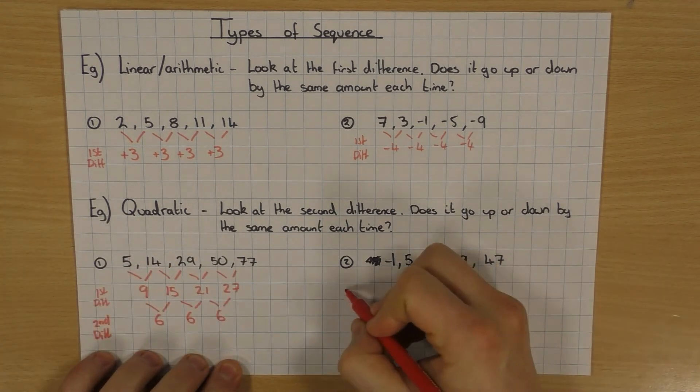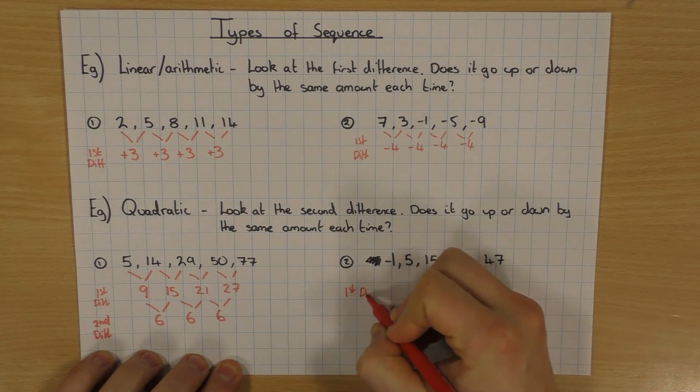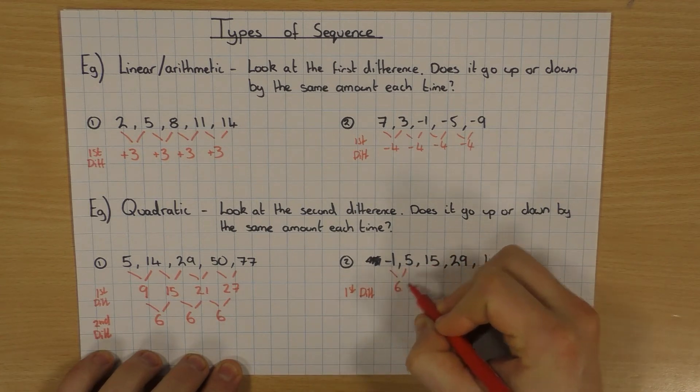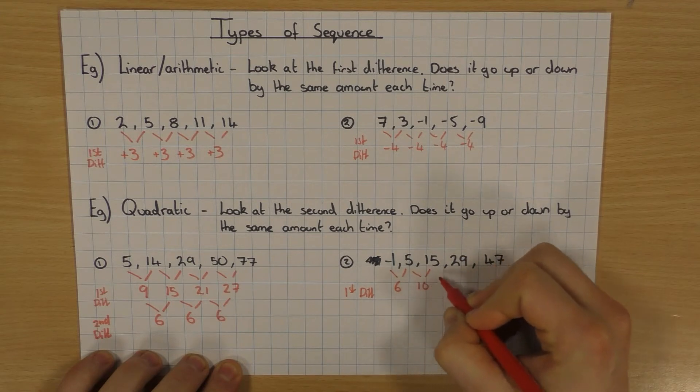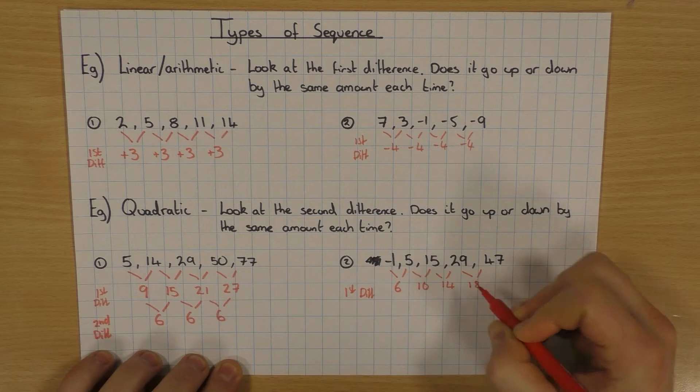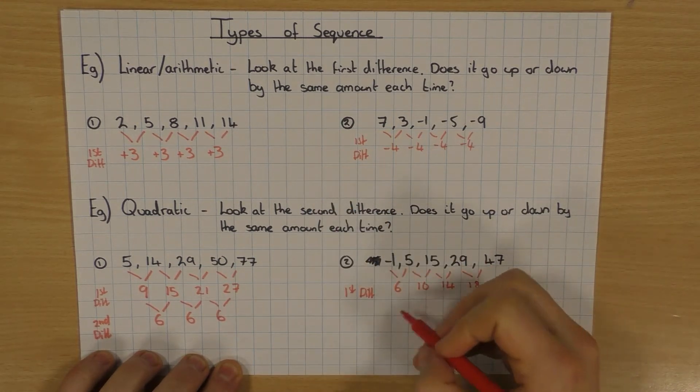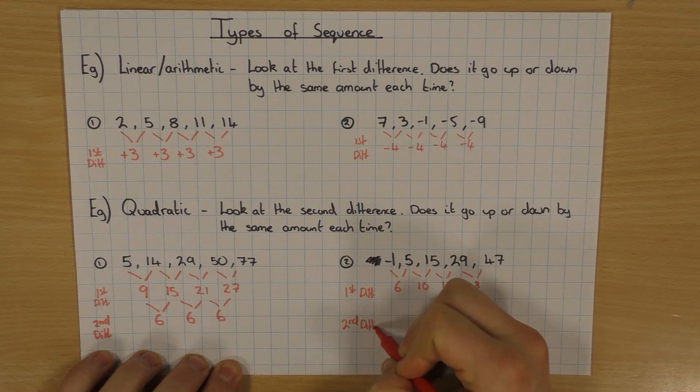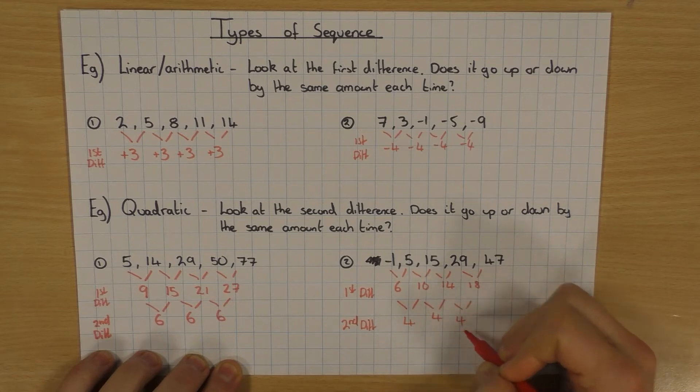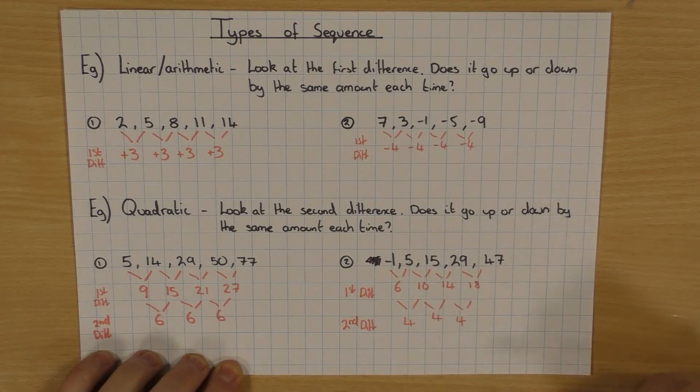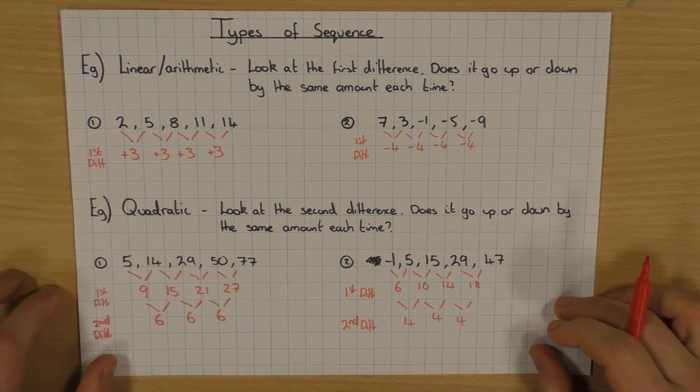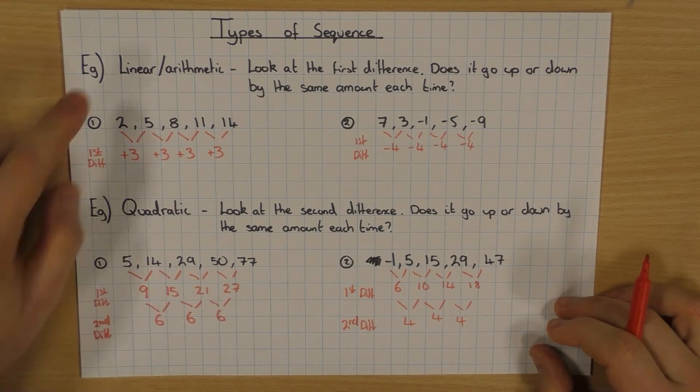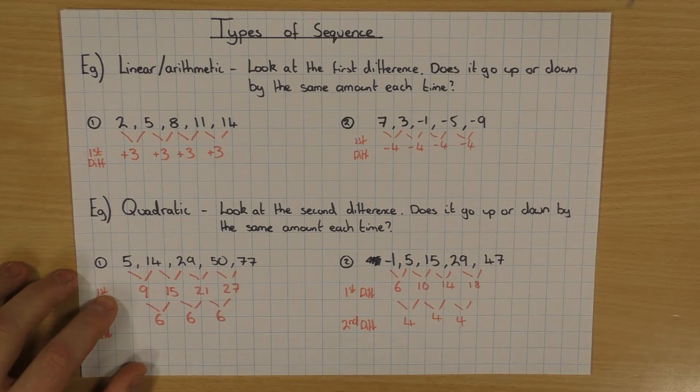Exactly the same thing over here. Look at the first difference first. So the difference there is 6. Then it's 10. Then it's 14. Then it's 18. So clearly not linear because these are all different. However, if I have a look at the second difference. 4, 4 and 4. So again, because the second difference is the same, definitely a quadratic sequence. Okay, so they're the two main ones that we tend to look at at high school.